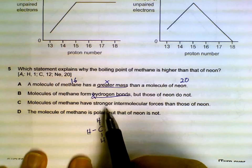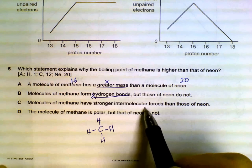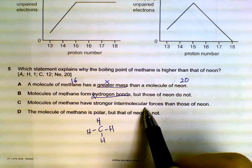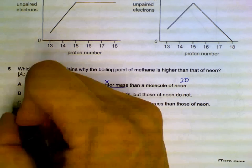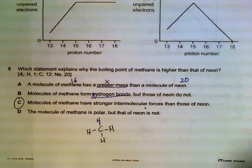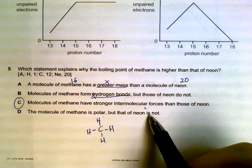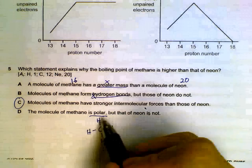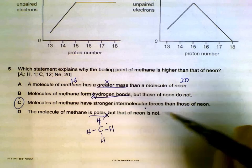Molecules of methane has stronger intermolecular attraction - this will be true. If you have stronger intermolecular attraction, you require more energy to separate the molecules, so boiling point will be higher. If you check the last one, methane is polar, neon is not - methane, as mentioned just now, is a non-polar molecule. It has instantaneous dipole-induced dipole.